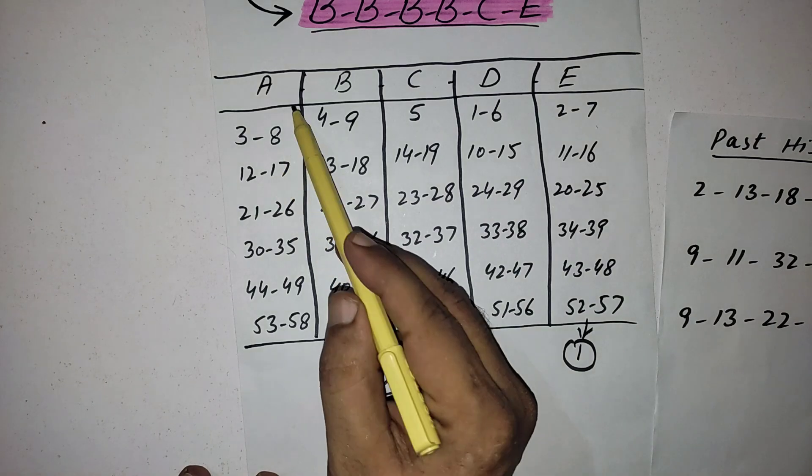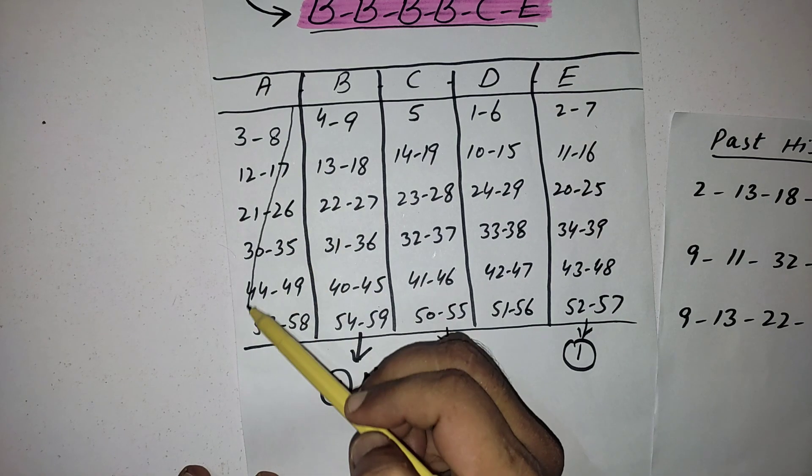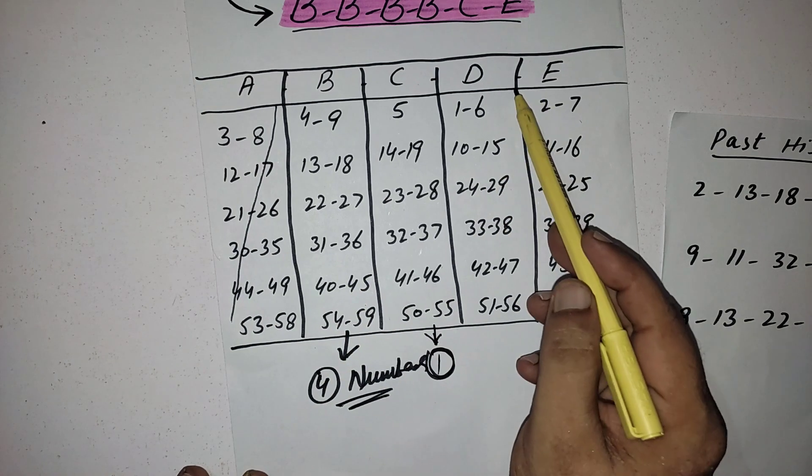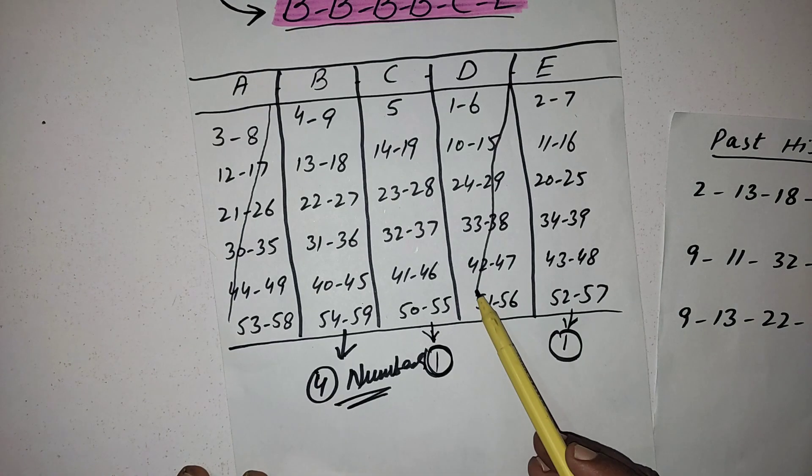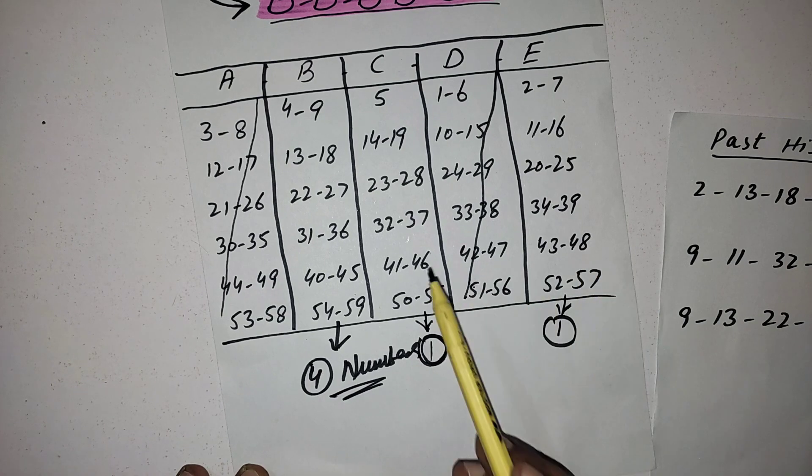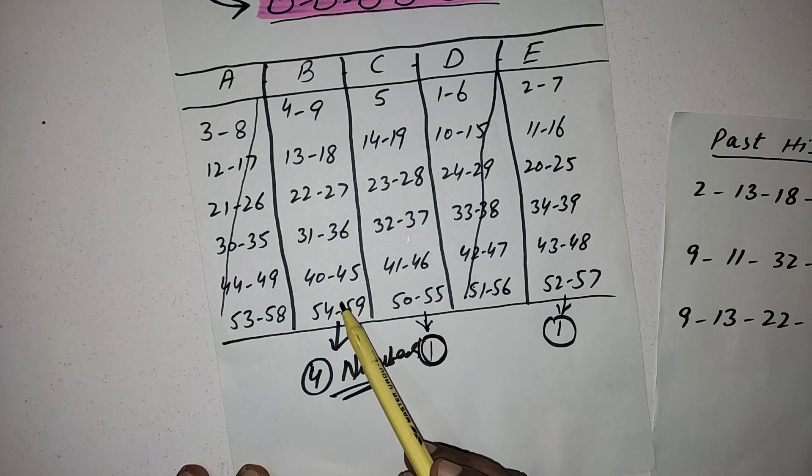For this strategy we don't need this category. You don't need to select from A category number and also don't need to select from D category number. Okay, one number you need to select from here, one number from here, and four numbers from here.